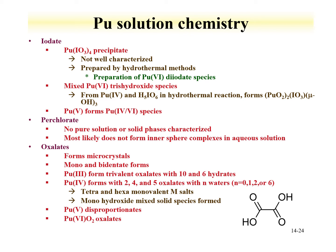Other compounds in solution include iodates, which have been precipitated but are not well characterized, prepared by hydrothermal methods. Perchlorates are generally used for non-coordinating systems with no pure solution or solid phases characterized — most likely does not form inner-sphere complexes. The oxalate is a very common ligand used to precipitate plutonium, forming microcrystals. Plutonium-3 forms oxalate precipitates with 10 to 6 waters. Plutonium-4 can form species with 2, 4, and 5 oxalates with 0 to 6 water molecules. Plutonium-5 tends to disproportionate, and plutonium-6 oxalates can be formed in solution and will precipitate.